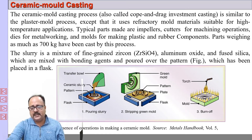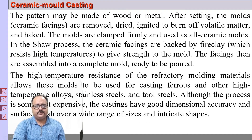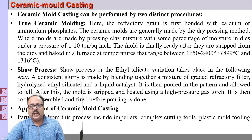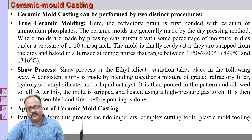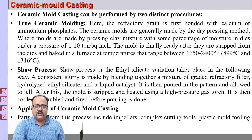In the Shaw process, a torch is used to heat the mold. In the true ceramic process, the pattern is stripped and then heated in an oven. In true ceramic molding, the binder contains calcium or aluminium phosphate and the ceramic molds are made by dry pressing. The mold is finally stripped from the dies and baked in the furnace. In the Shaw process, ethyl silicate or hydrolyzed ethyl silicate is used as a liquid catalyst, poured over the pattern and allowed to gel. The mold is then stripped, heated under pressure with a gas torch, cooled, assembled, and fired before pouring. Difficult applications of ceramic mold casting include impellers, complex cutting tools, plastic molding, and mold tooling.